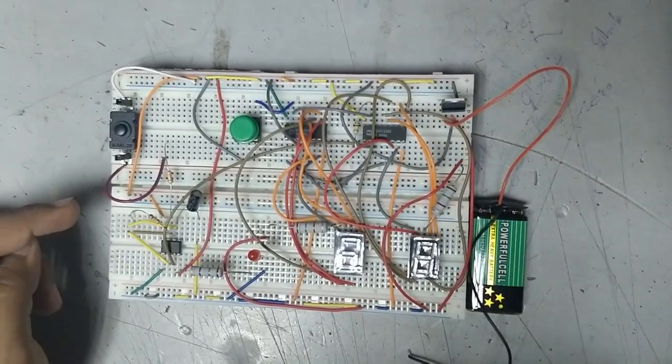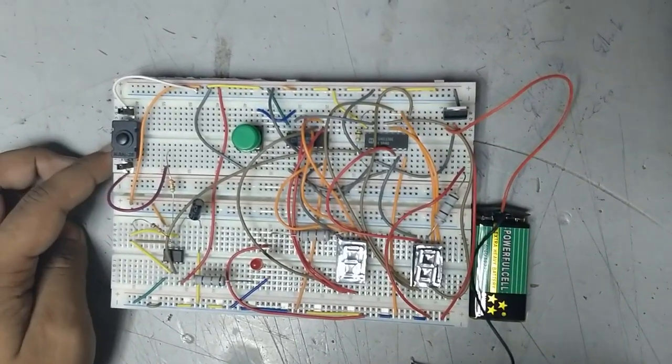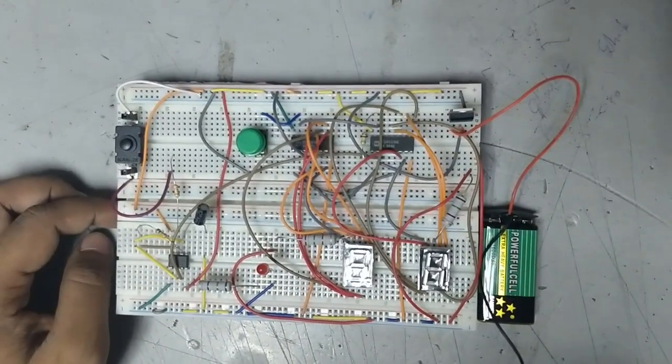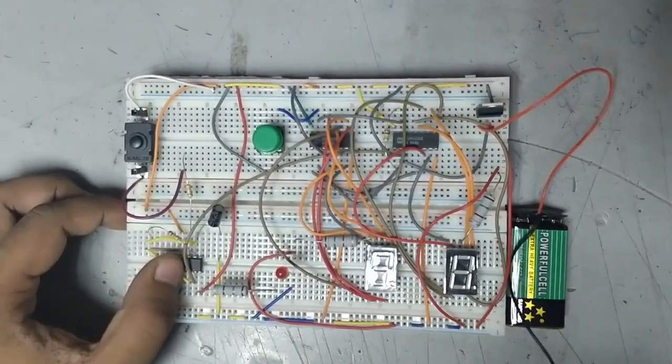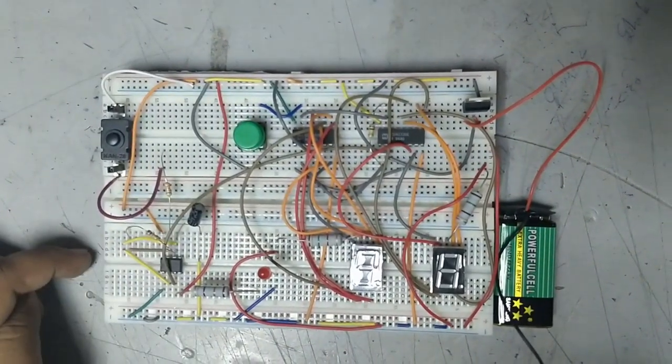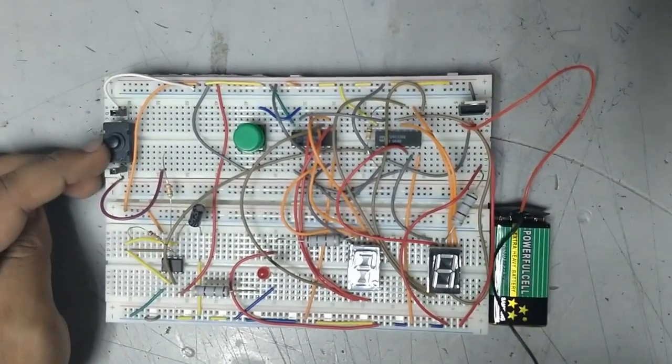Here we have used the astable mode. We have controlled the duty cycle by two external resistances and a capacitor. Now this is the start and stop button. This is the reset button.